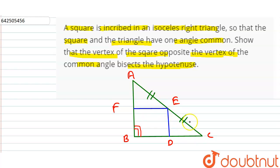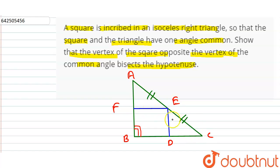If AE equals EC, then E is the midpoint of the hypotenuse. To prove this, we take triangle AFE and triangle CDE. If both triangles are congruent, then these two sides will be equal.